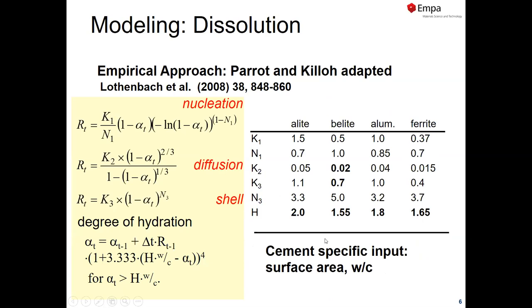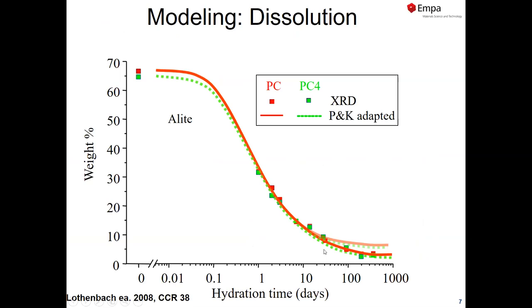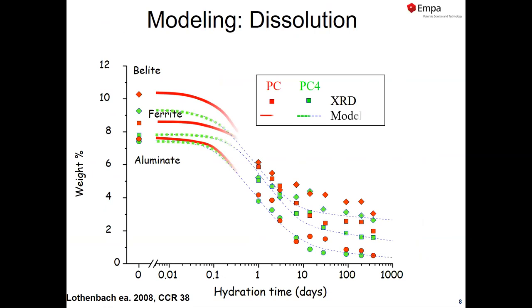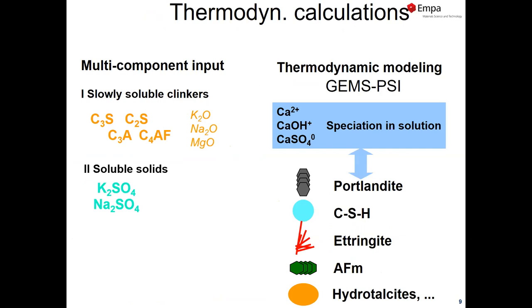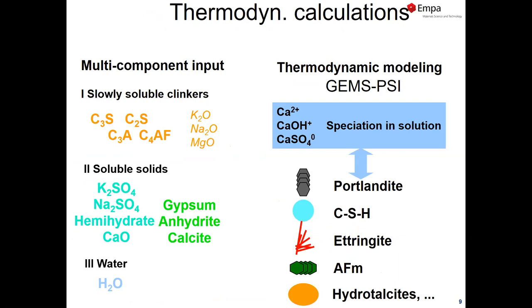We also slightly adapted the original values of Parrot and Killoh because we felt it fits better to our results. This is documented in a paper, and if you use that set of data you can see that especially in the long term we have a bit higher degree of reaction, which fits much better with what you observe in modern Portland cement. You can also apply that to all other clinker phases like belite, ferrite, and aluminate. We actually looked at two different cements: a Portland cement without limestone and a Portland cement with four percent limestone.